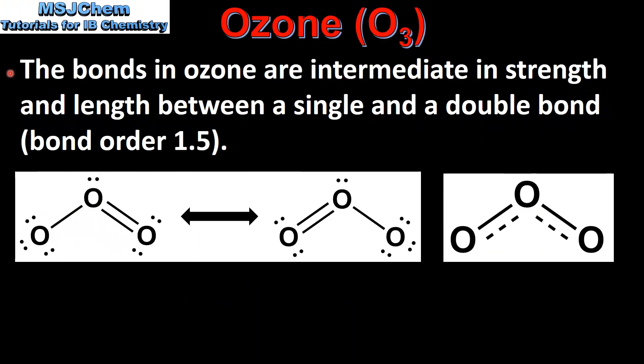We'll start by looking at the bonding in ozone. The bonds in ozone are intermediate in strength and length between a single and a double bond. They have a bond order of 1.5.